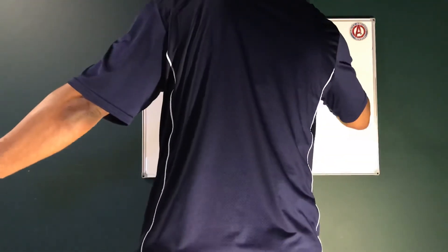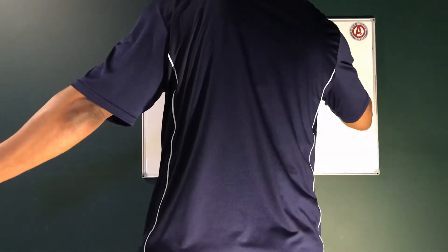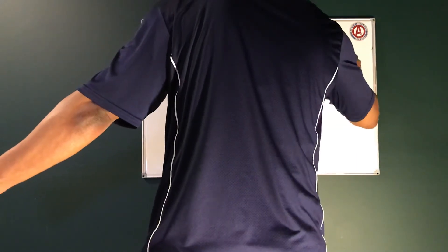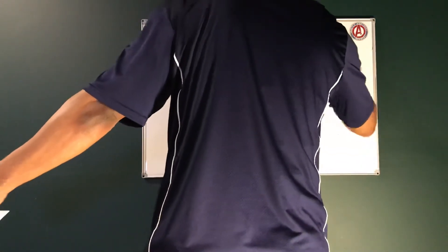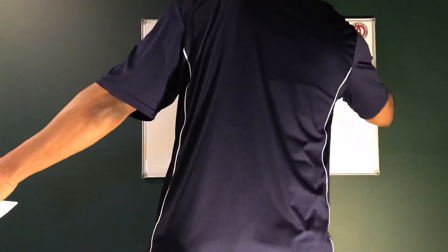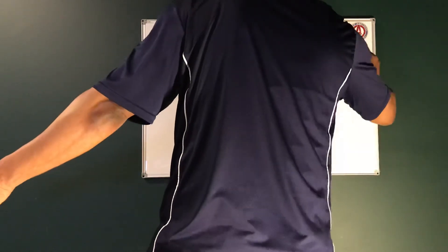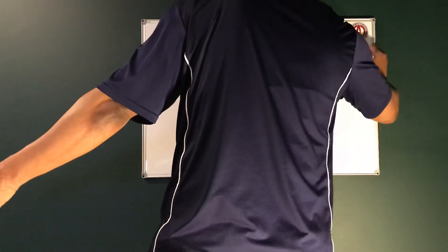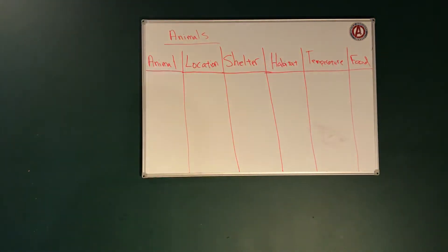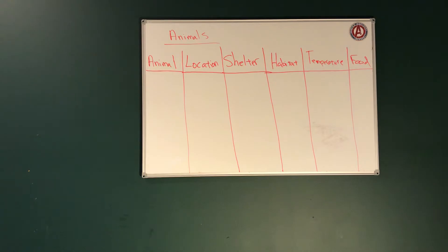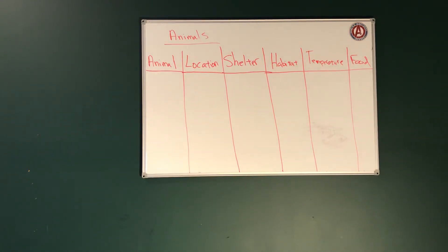Next, we're going to talk about temperature. And then finally, we're going to talk about food. I'm going to give you guys a couple of seconds to get that chart copied down into your journal: animal, location, shelter, habitat, temperature, and food.